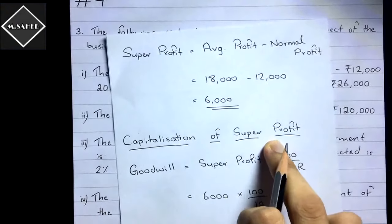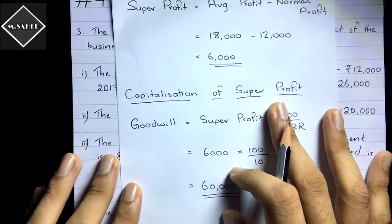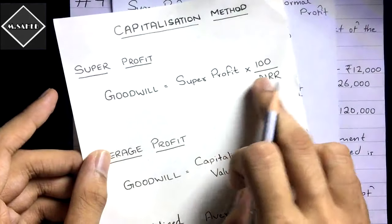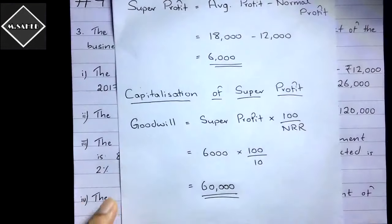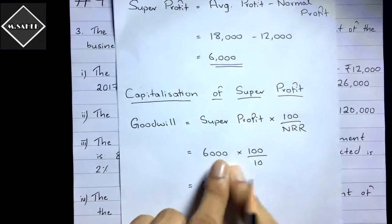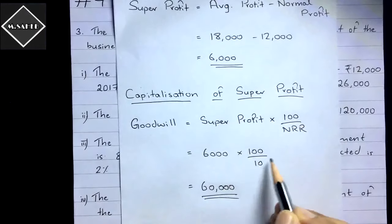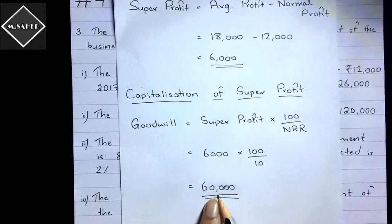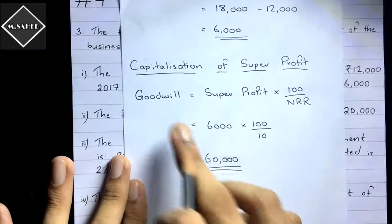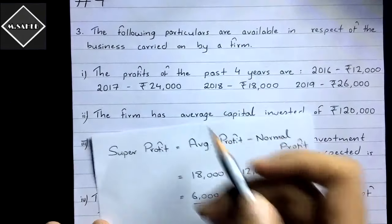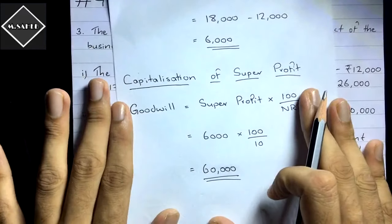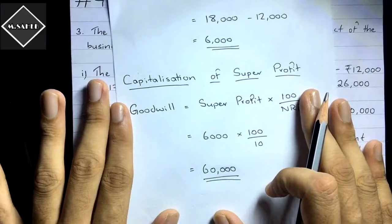Now capitalize the super profit using the formula: Super Profit × 100 / NRR = 6,000 × 100 / 10 = 60,000. So the value of goodwill is 60,000. This is how you use the capitalization method to capitalize the super profit and calculate goodwill.